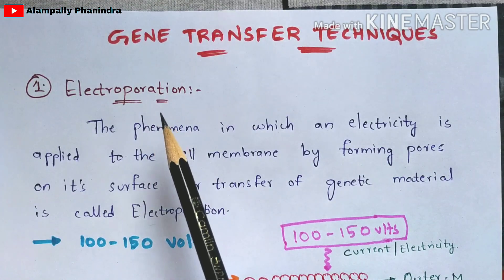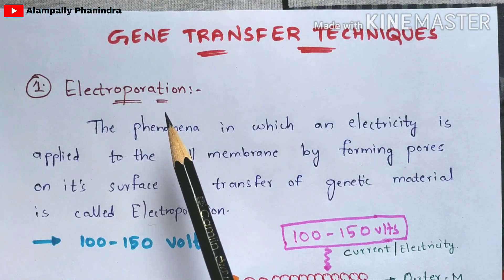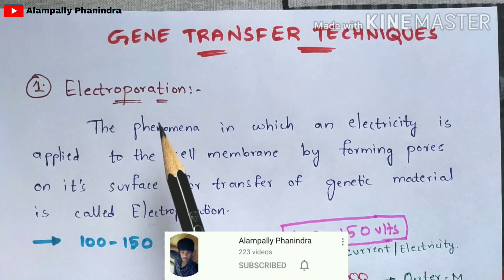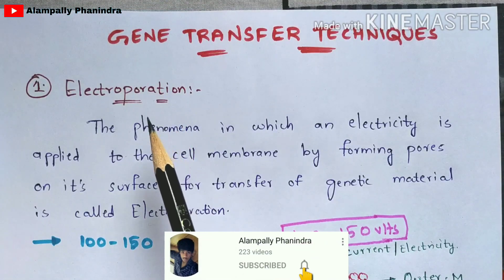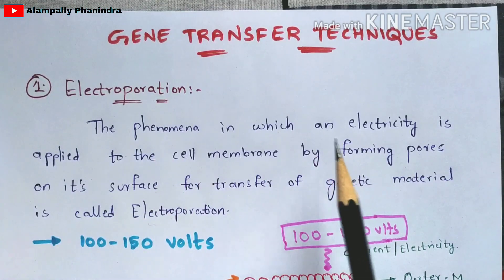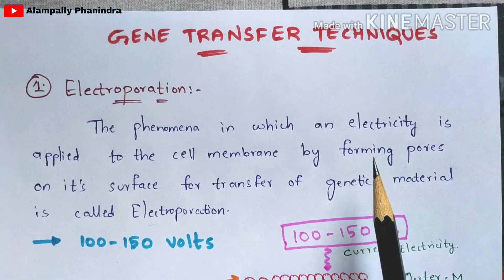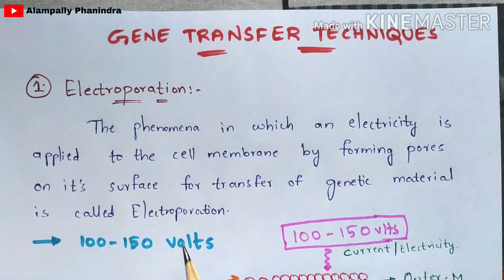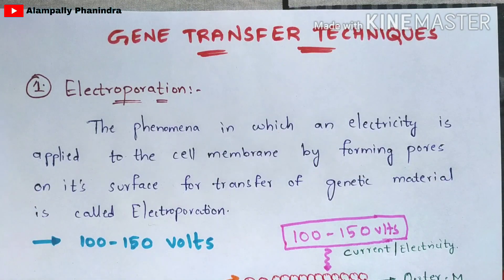Once a pore is formed on the cell membrane, we can transfer a gene into it. The electricity applied is 100 to 150 volts of electric current, which is used to form a pore on the cell membrane.